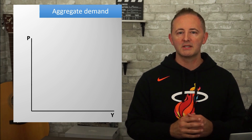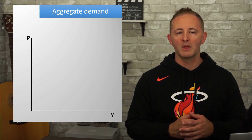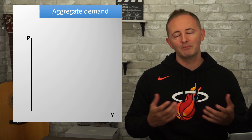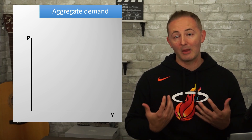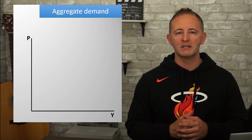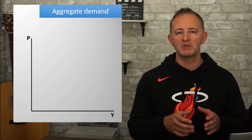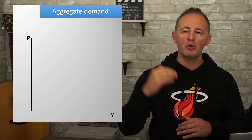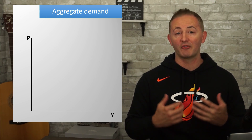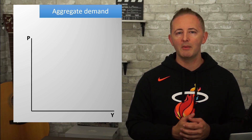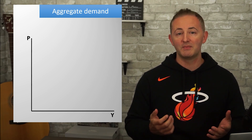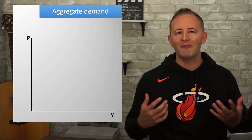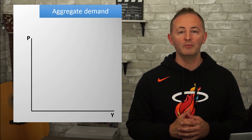The horizontal axis is Y for real GDP. If you prefer to write RGDP or 'aggregate output,' that's fine. The horizontal axis shows us how much stuff an economy is producing, while the vertical axis shows us how much that stuff costs, which means we'll be able to see if there's been any inflation. We're really just graphing what we learned about in Unit 2.